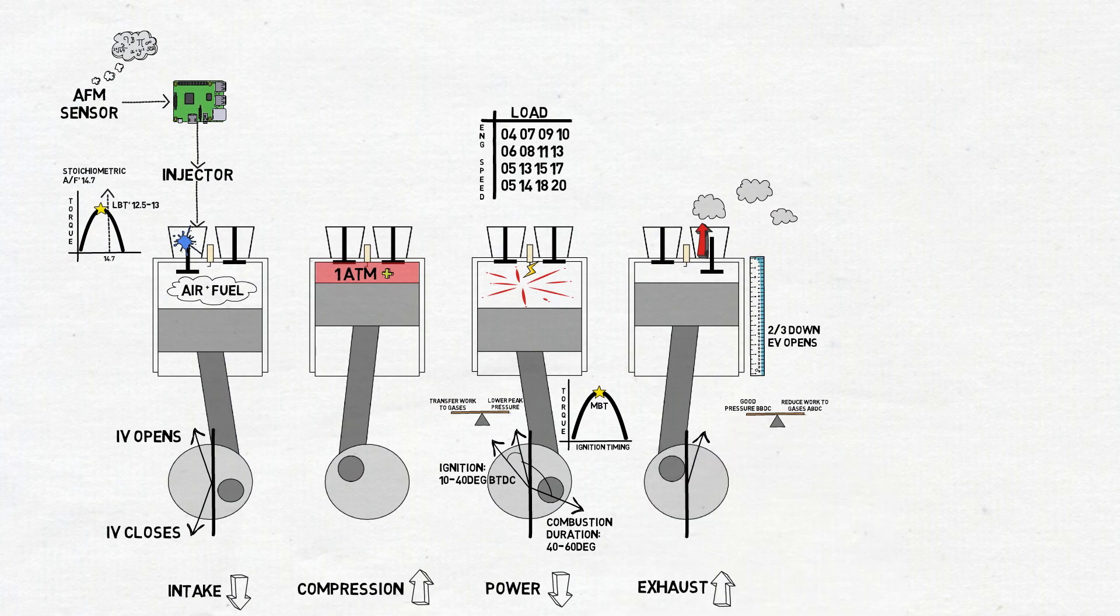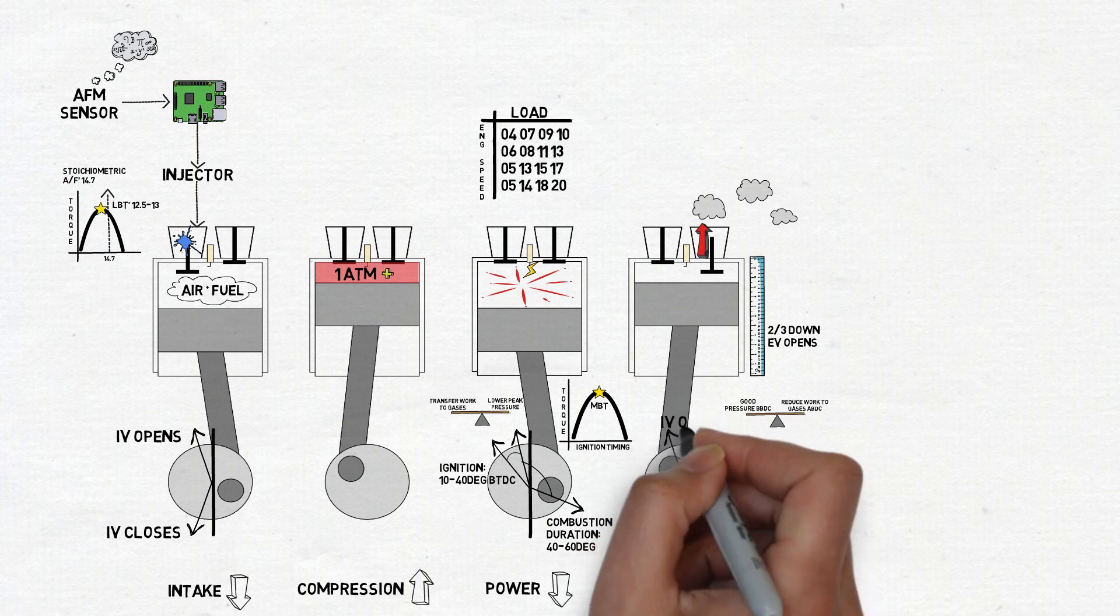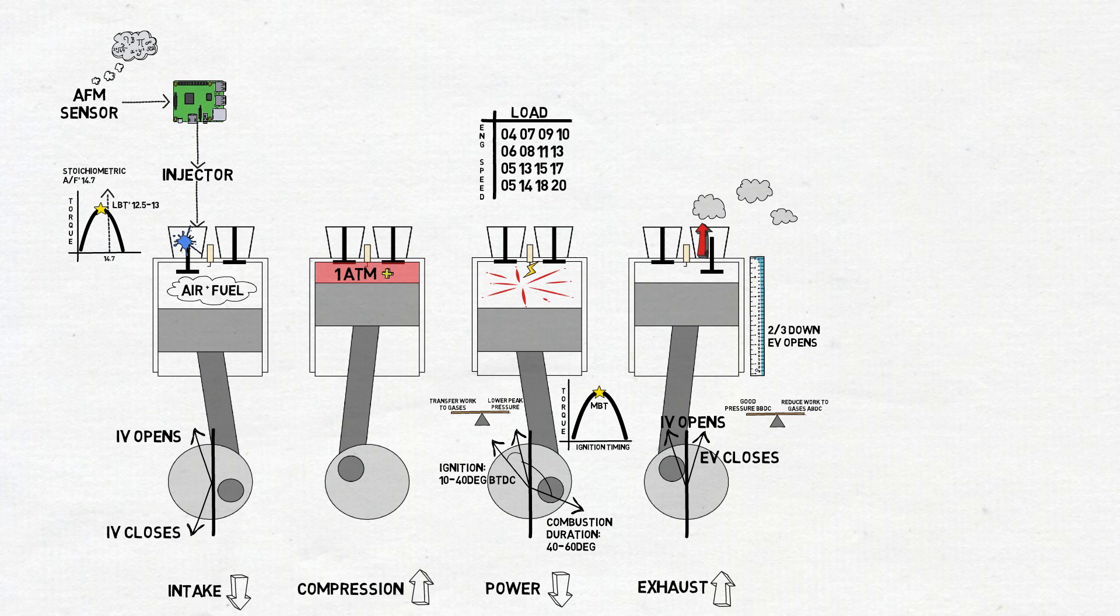Since the exhaust valve stays briefly open after top dead center, and the intake valve opens shortly before top dead center, there is often a period of overlap. This ensures that both valves are fully open when the piston velocity is at its highest.